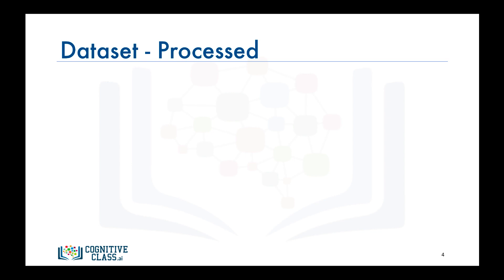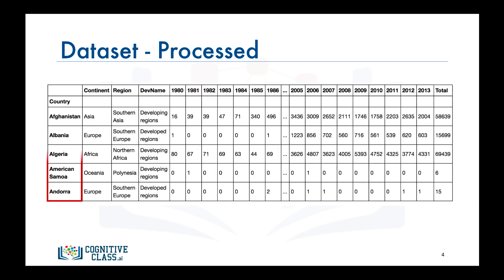Now let's process the data frame so that the country name becomes the index of each row. This should make retrieving rows pertaining to specific countries a lot easier.